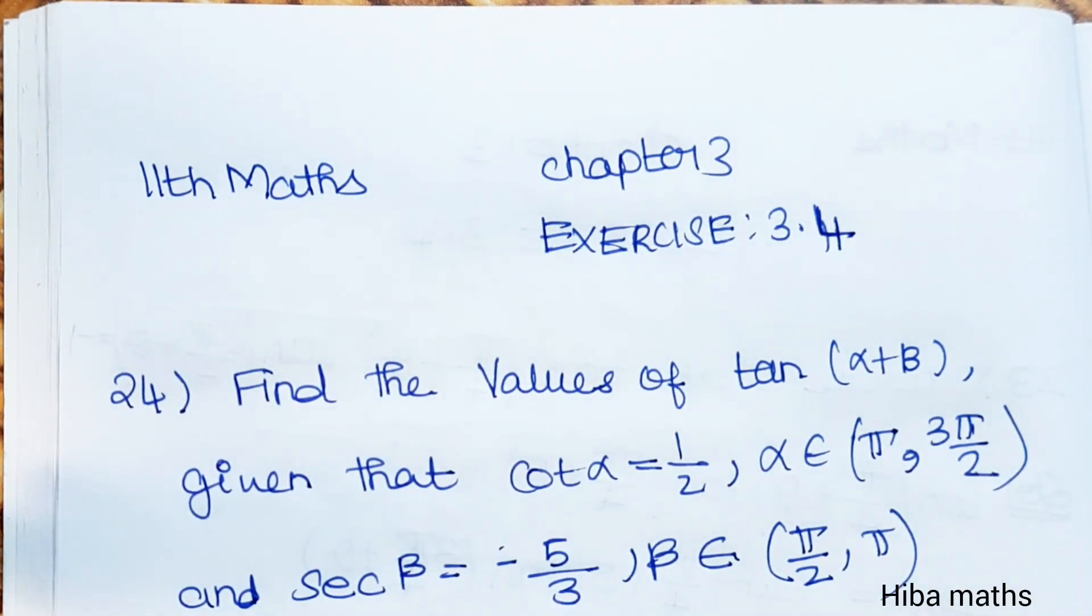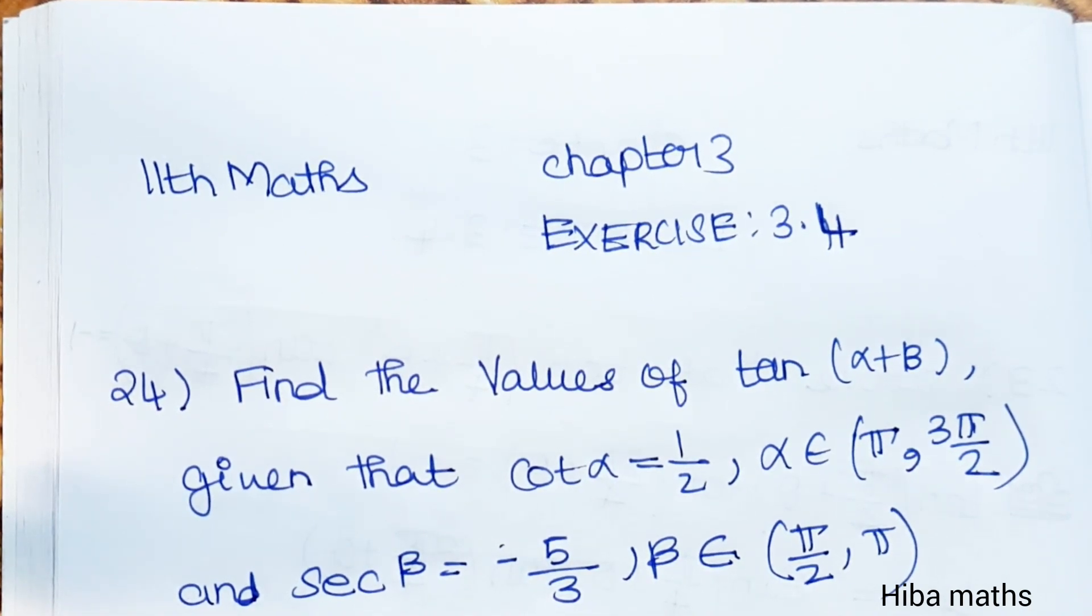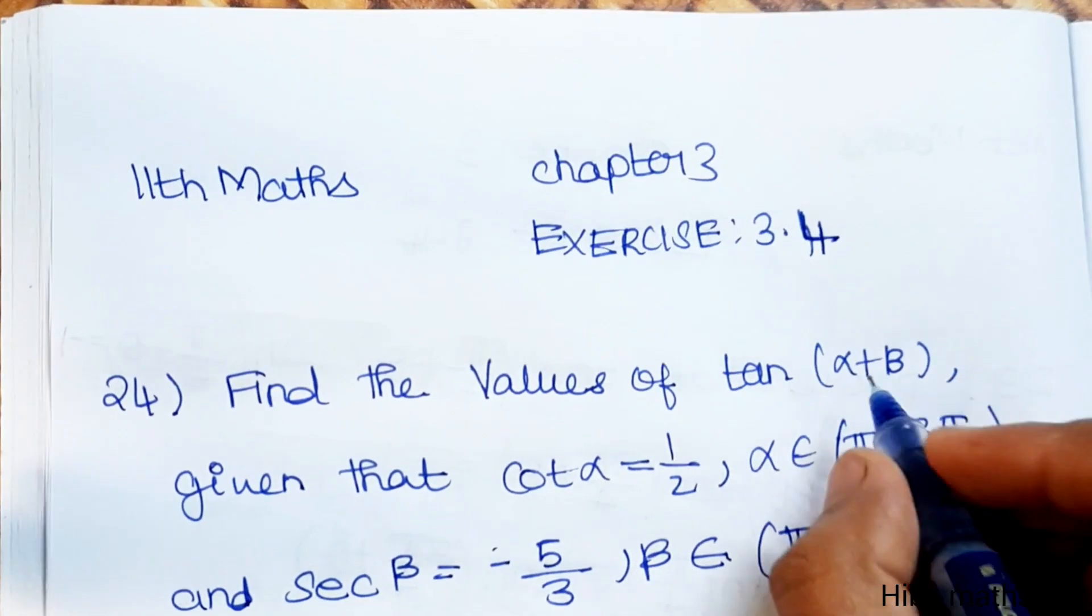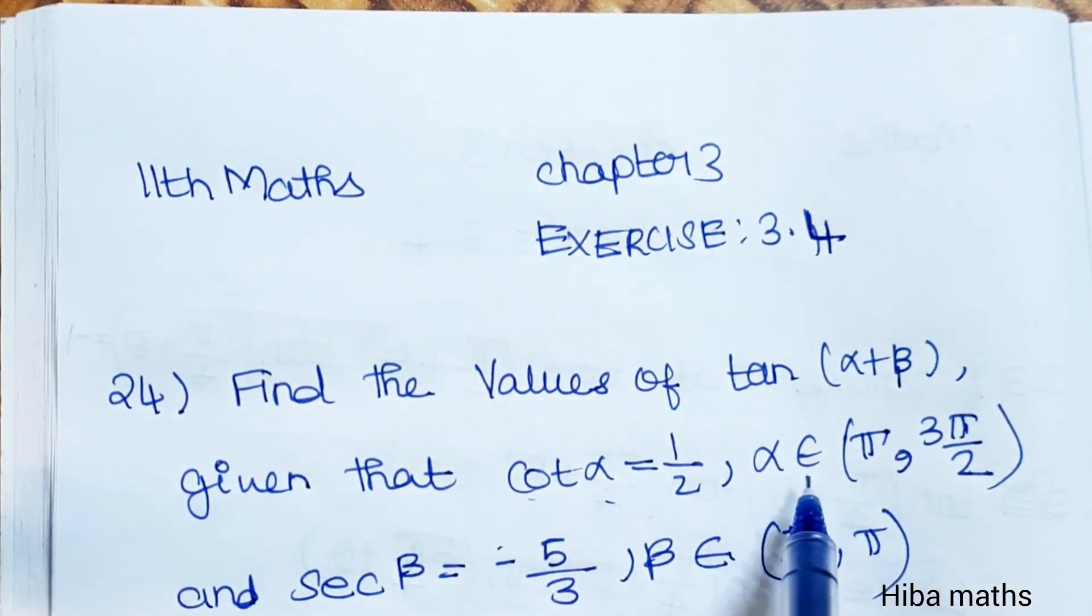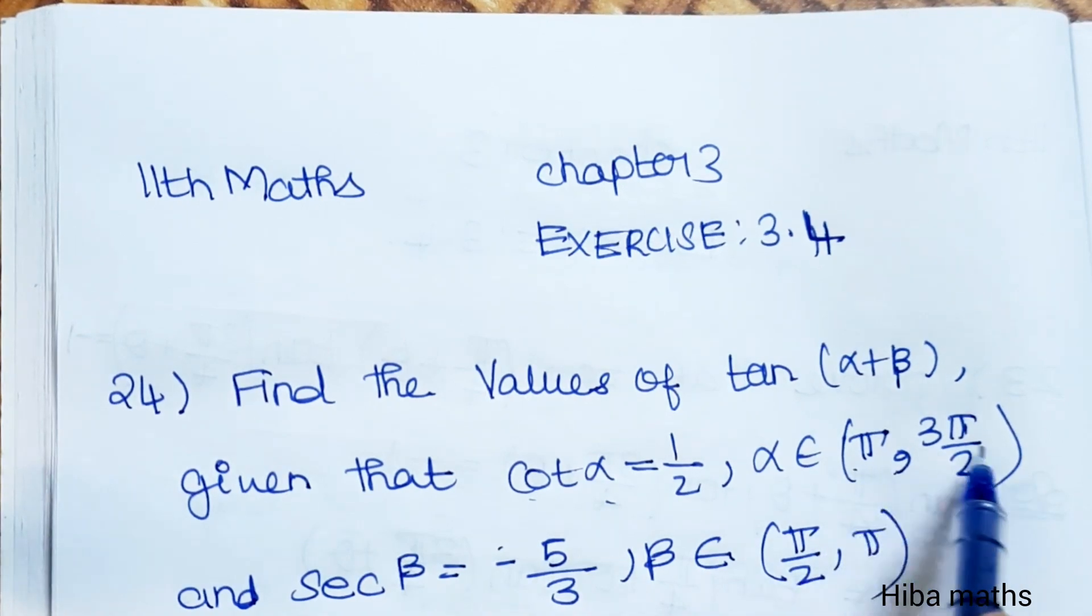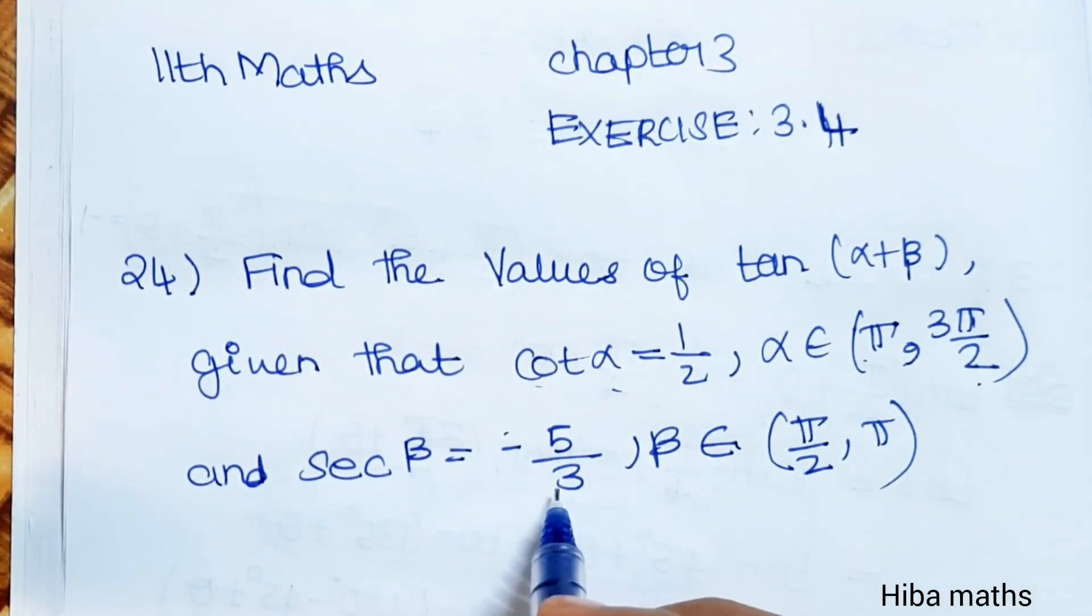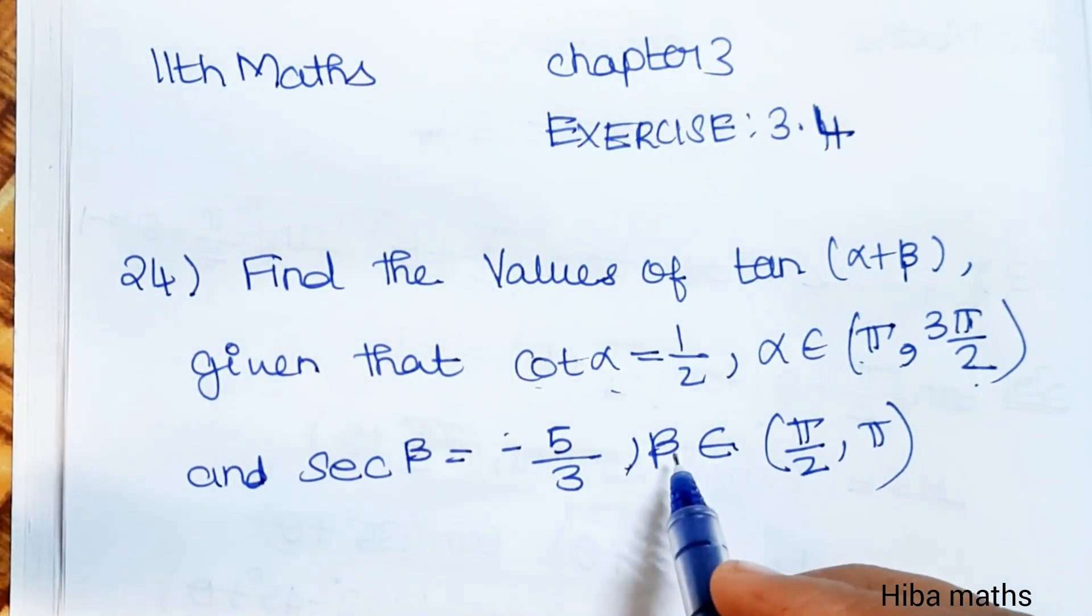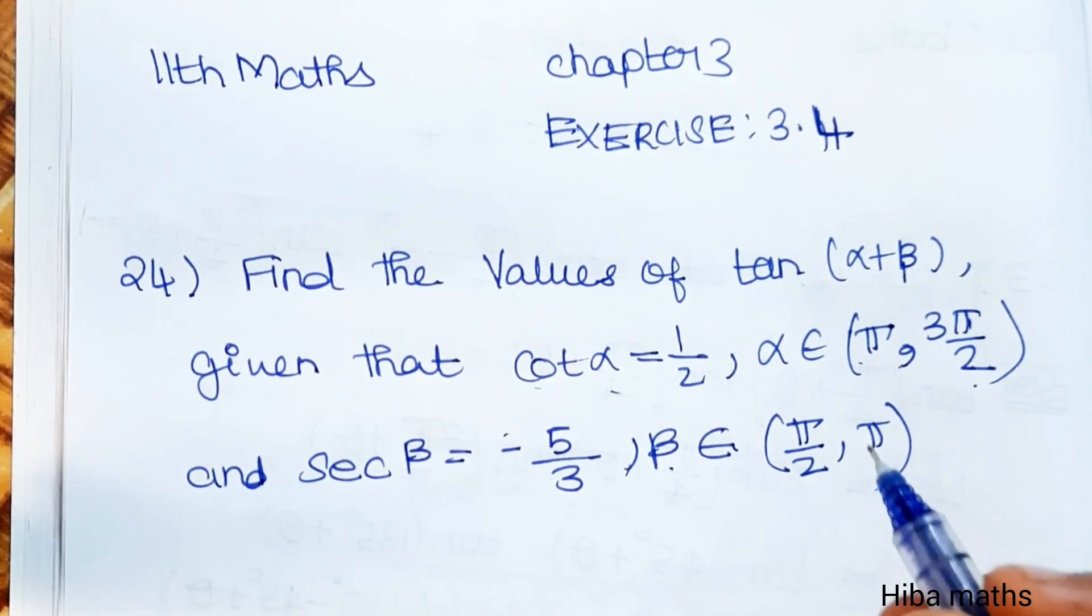Hello students, welcome to EBAMACS 11th standard math, chapter 3, exercise 3.4, question 24. Find the value of tan(α+β) given that cot α is equal to 1/2, where α belongs to (π, 3π/2), and sec β is equal to -5/3, where β belongs to (π/2, π).